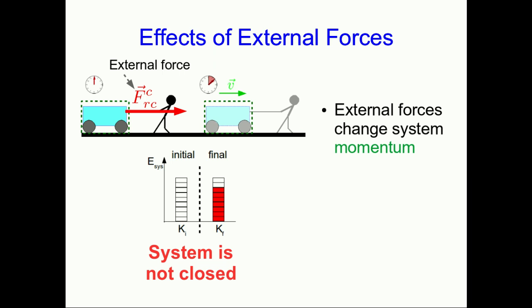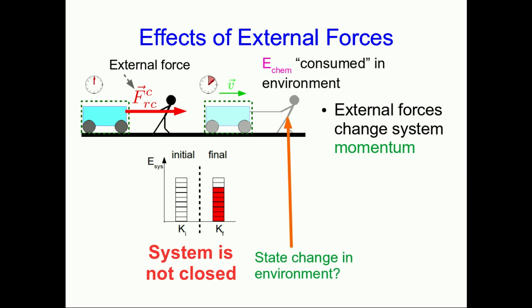The way we know to verify that is to look for a state change in the environment, and indeed there is one here, but it's rather subtle. The person is consuming chemical energy, and some of that is ending up as kinetic energy in the system and some of it as thermal energy in the person.